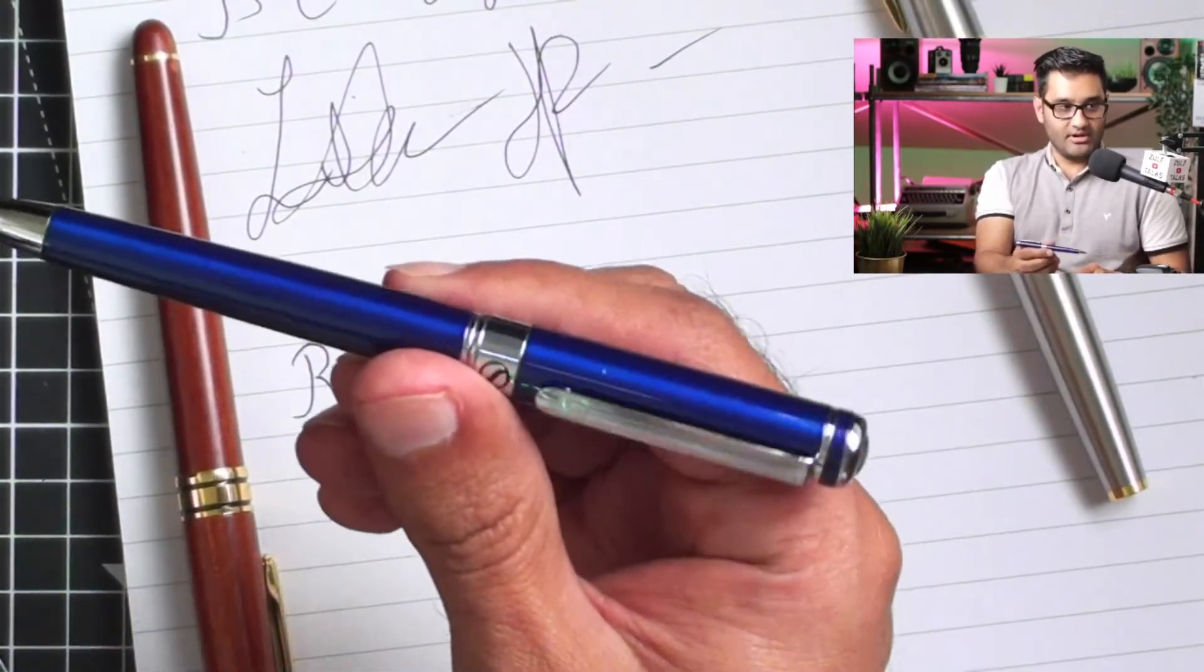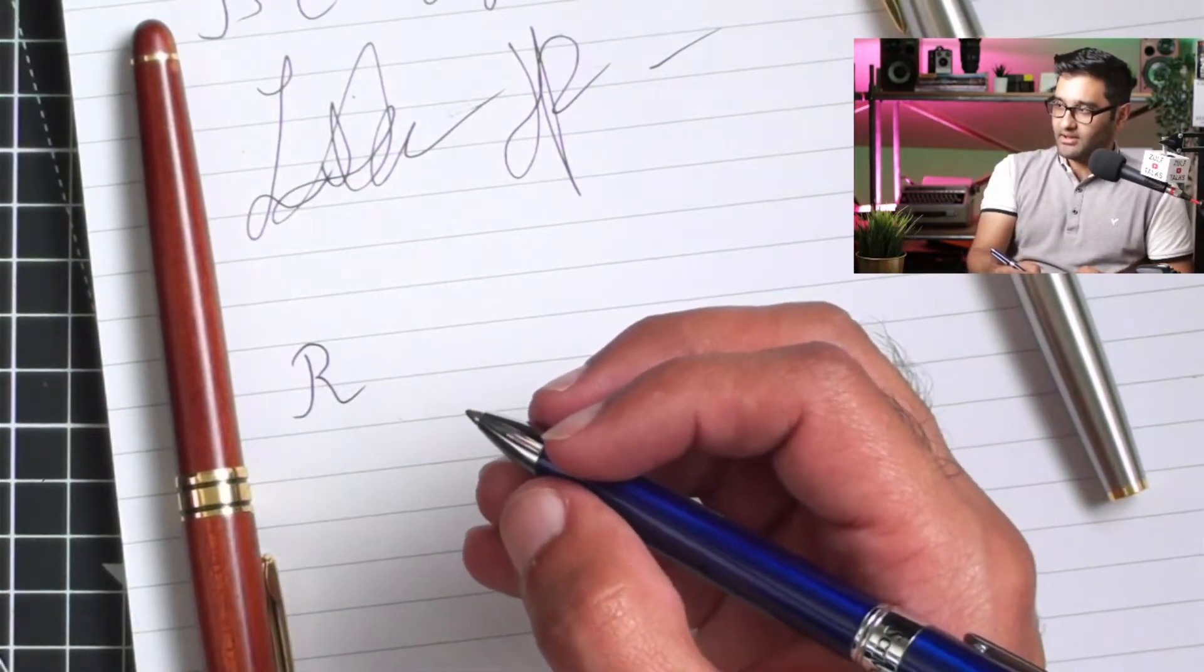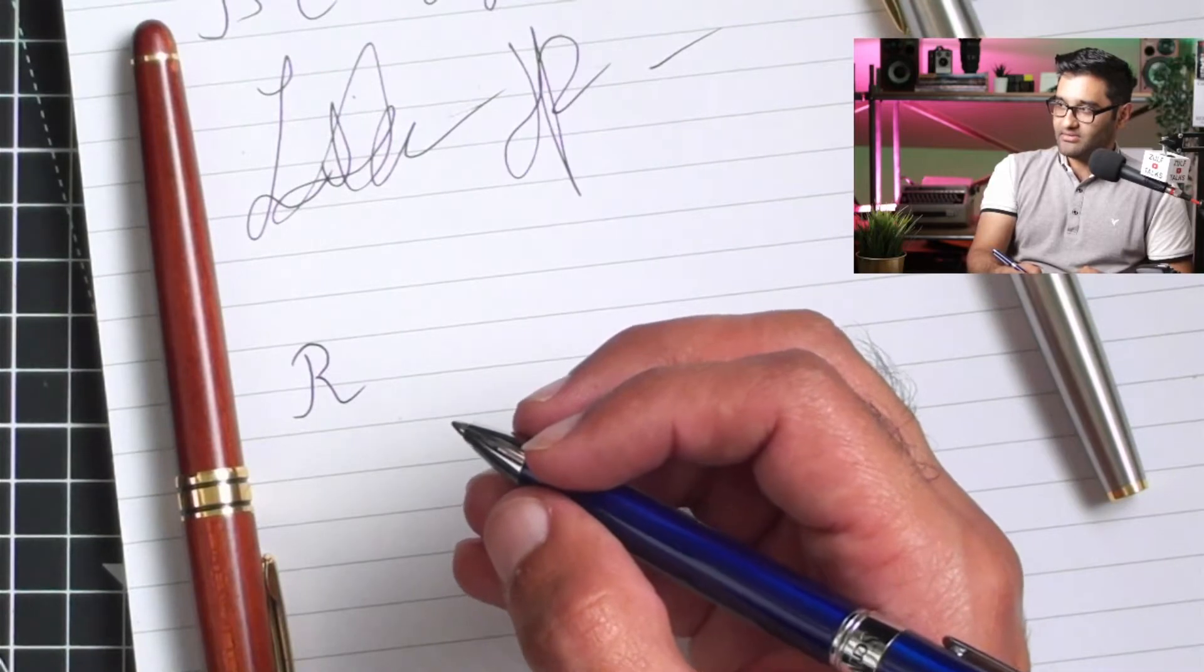And then we'll do midnight, midnight blue - that's a bit of a beauty. What should we do with that? We'll do B.